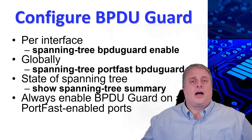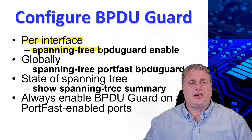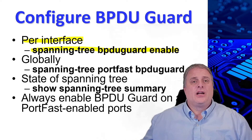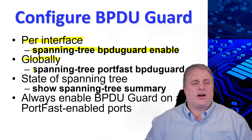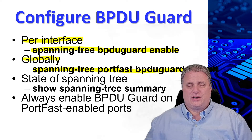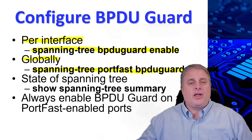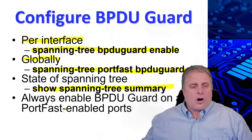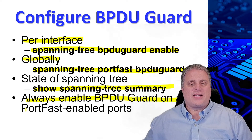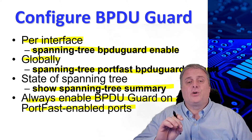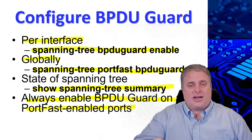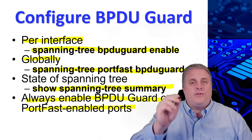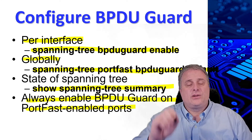BPDU guard can be enabled on a port per interface by using the spanning tree BPDU guard enable command on an interface, so you have to be into that interface. Globally, you can also enable BPDU guard by using spanning tree PortFast BPDU guard default, and that's in global configuration mode. To display information about the state of spanning tree, use the show spanning tree summary. Always enable BPDU guard on all PortFast enabled interfaces. PortFast skips some of the negotiation process, so it's streamlined — when you connect your device into that port, it goes green much quicker. If you do PortFast, make sure you always put BPDU guard on those PortFast enabled ports.